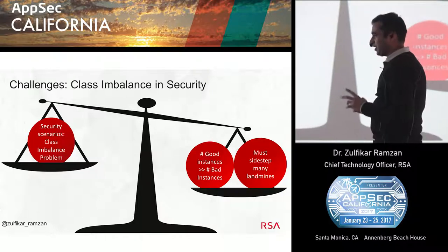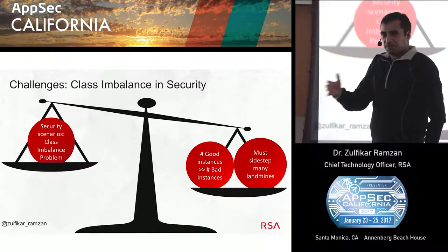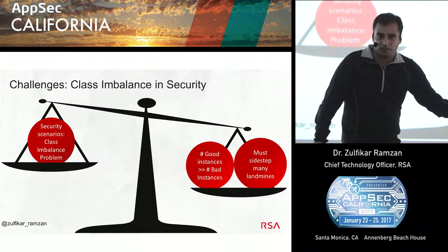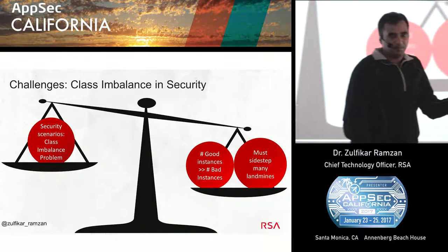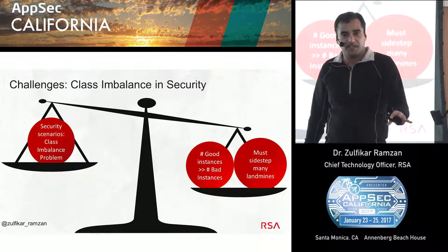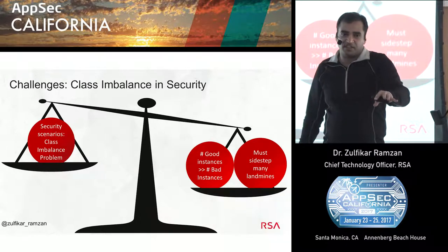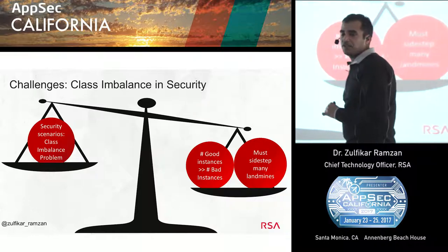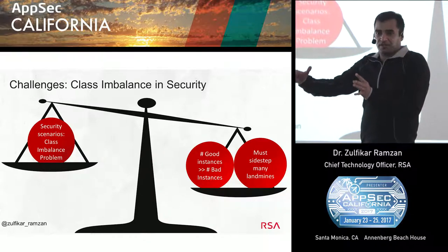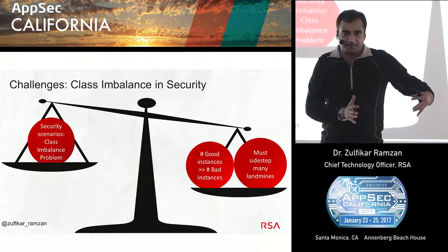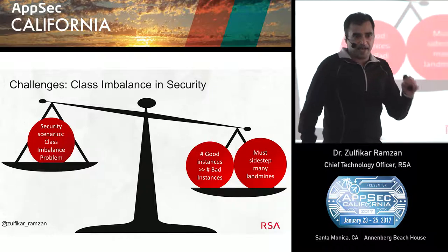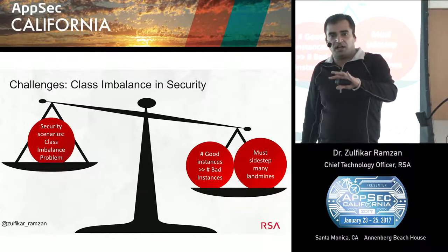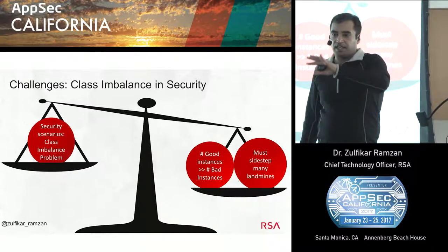Security has what I call a class imbalance problem. Most things we see in real life are not malicious — most credit card transactions are benign, most files on your laptop are not malware. This has a huge implication for machine learning systems, because machine learning systems have to sidestep all those legitimate instances on their way to finding that one illegitimate instance. Which means the problem of false positives is huge — it's the number one thing you've got to focus on minimizing in a field setting. Class imbalance becomes really critical because if you don't think about it, you're not going to be able to interpret your metrics correctly.